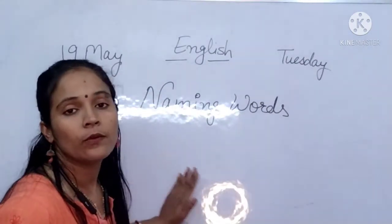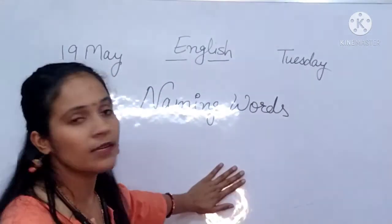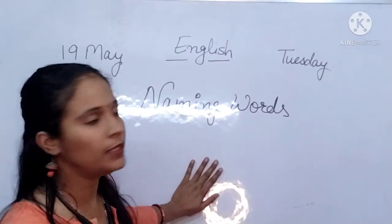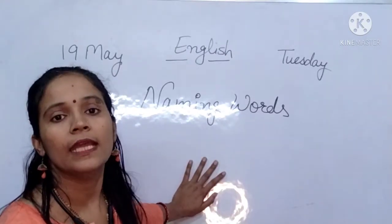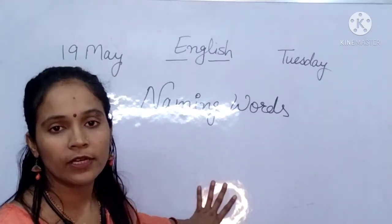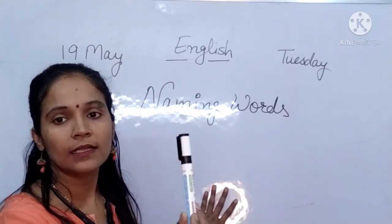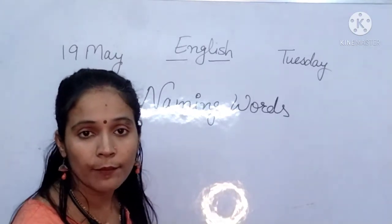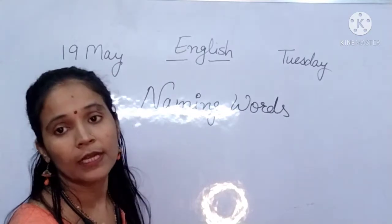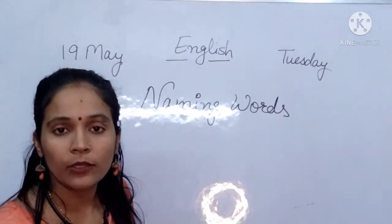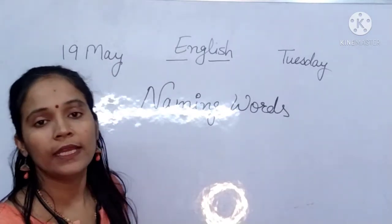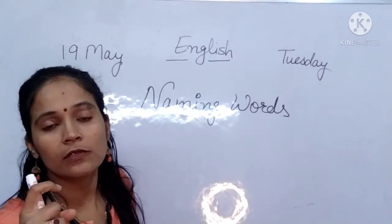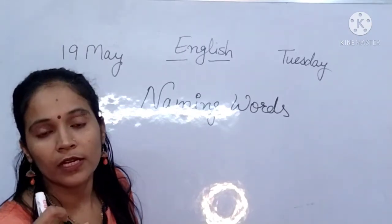This is a whiteboard — this is also a naming word. And this is a marker — marker is also a naming word. My name is Anu, so Anu is also a naming word.